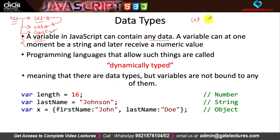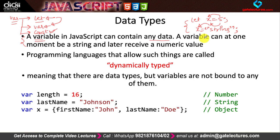A variable in JavaScript can contain any data. For example, if I say let x = 5, I'm storing an integer number in x. I can also do x = 'STRING', where x is now storing a string. So a variable is dynamically typed in JavaScript — dynamically typed means the type of value the variable holds can change within the program. A variable can at one moment be a string and later be a numeric value.